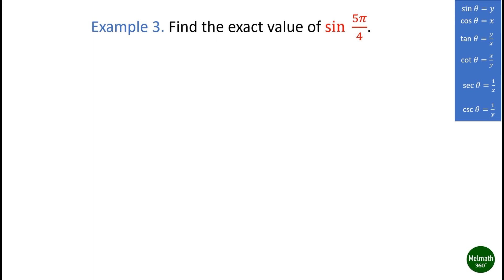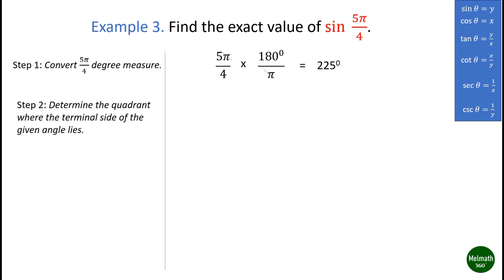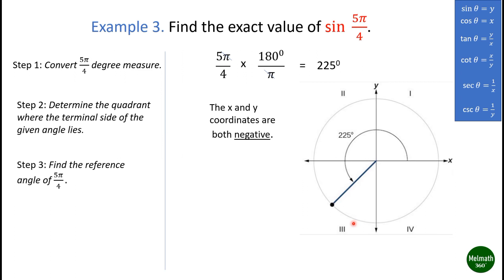Example three: find the exact value of sine(5π/4). First, convert 5π/4 to degree measure: 5π/4 × (180°/π) = 225 degrees. Next, determine the quadrant where the terminal side of the given angle lies. Observe that 225 degrees, or 5π/4, is located in quadrant three; therefore the x and y coordinates are both negative.